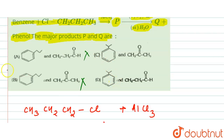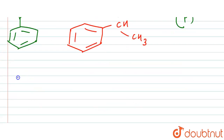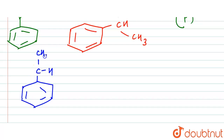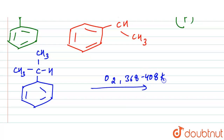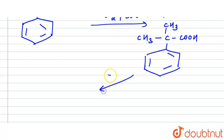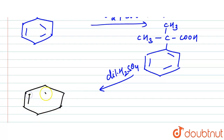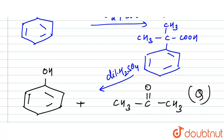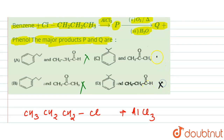This isopropyl benzene (cumene) with O2 at 368–408 Kelvin undergoes aerial oxidation to form cumene hydroperoxide. Then with dilute H2SO4, we get the formation of phenol plus CH3-C(=O)-CH3 — that is acetone. So product Q is acetone. This means option C is our correct answer.